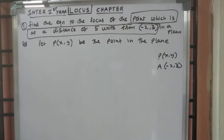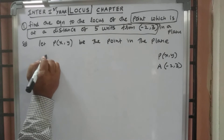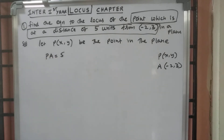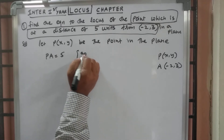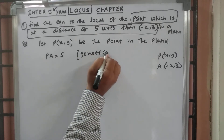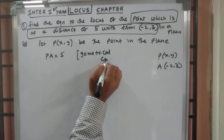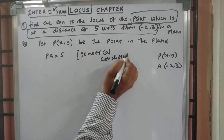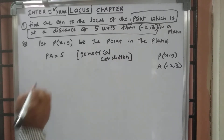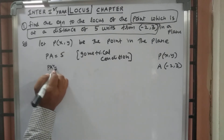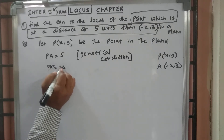The geometrical condition is P A is equal to 5. Squaring on both sides, you will get P A square is equal to 25.